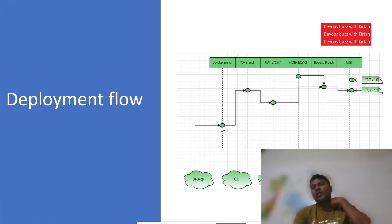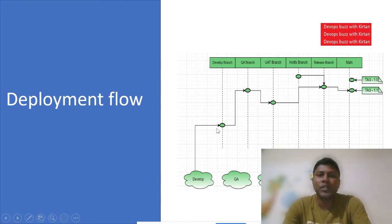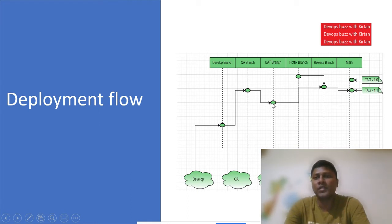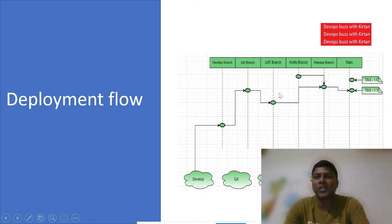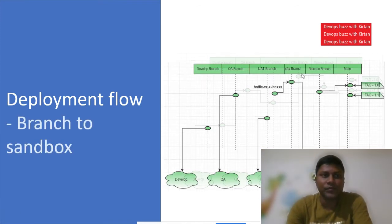When a developer wants to start their sprint changes, they will cut a branch from the develop branch and create a feature branch. They will push or check in the code into that feature branch, then create a pull request to the develop branch. The code will then move from develop branch to QA branch, then QA to UAT, then UAT to release branch, and finally from the release branch the code goes to production. I have a dedicated slide for the hotfix branch which I'll discuss later.